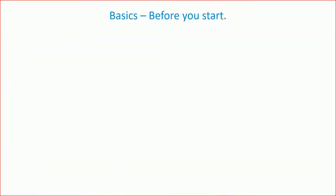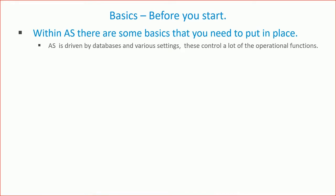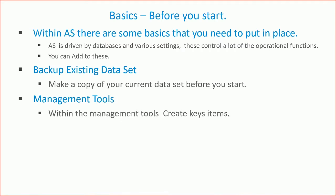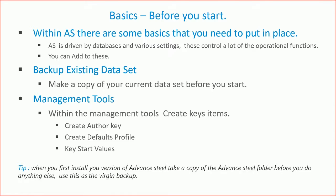These are the basics before you start any modification. Advanced Steel is a database-driven system with a load of settings in the background. Before you do anything: back everything up. Normally I do this the first time I install a new version — I copy the entire dataset and put it in a backup drive on a cloud drive. If I do anything wrong, I can always swap it back. I also configure my management tool: author values, key start values, and defaults profiles.